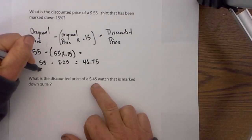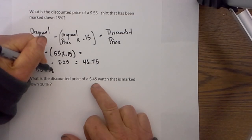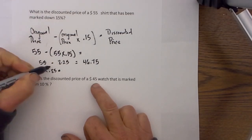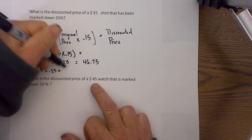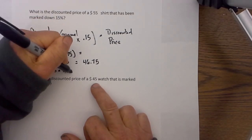You can just multiply 55 times .85 because that is 100% or 1 minus 15%, and that will get you the same answer.